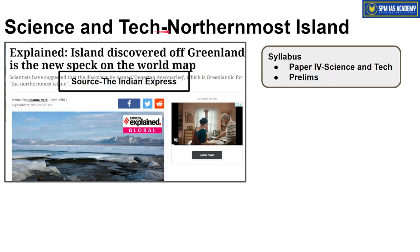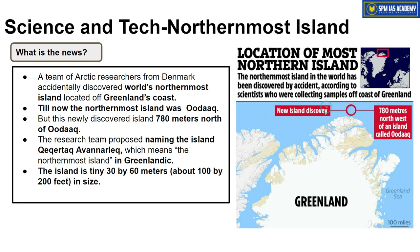The next article is taken from the science and technology segment — it is about the northernmost island of the world. This topic is important from our syllabus Paper 4, science and technology point of view. Until now it was believed that there is a small island north of Greenland called Oodaaq Island, which was considered the northernmost island of the world. But researchers accidentally discovered another island even further north than Oodaaq Island.